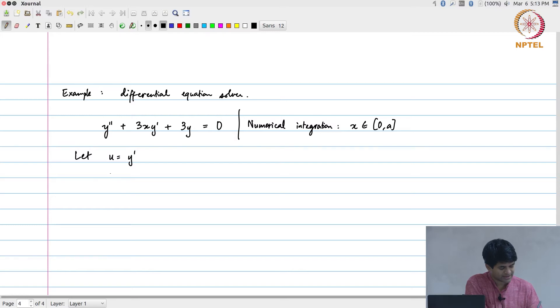Then what I can write in this case is u prime is equal to y double prime is equal to - I take the remaining terms to the other side - what I get is -3xu - 3y. I have just taken that top equation y'' plus blah blah and pushed the two terms to the right hand side.